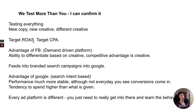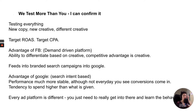On Google we go straight for Target ROAS or Target CPA campaign objectives. The advantage of Facebook is it's a demand-driven platform — our ability to differentiate is based on creative, and creative is the competitive advantage. Most people can't create video ads, which is why you should go into Facebook even if you're already doing Google. When people see your ad on Facebook, they go and search your brand on Google — that's where you'll see those high ROAS branded search campaigns.